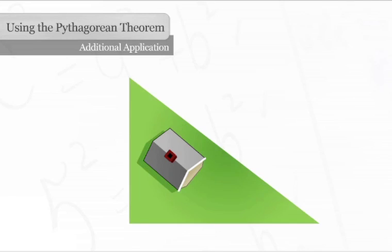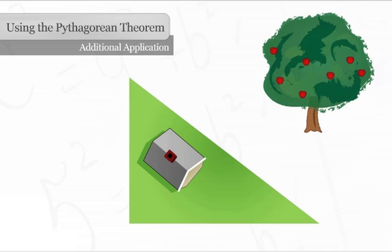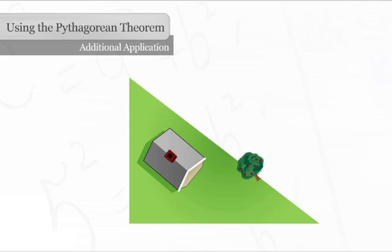Here is another practical application for using the Pythagorean theorem. Imagine you live in a home with a yard shaped like a right triangle. You really like apples and would like to plant an orchard around the perimeter or the outer edge of the yard.